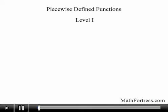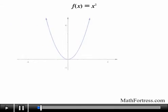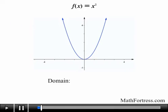Piecewise Defined Functions, Level 1. At times a function is defined differently on different parts of its domain. For example, the function f(x) = x² has a domain of all real numbers, defined from negative infinity to positive infinity.